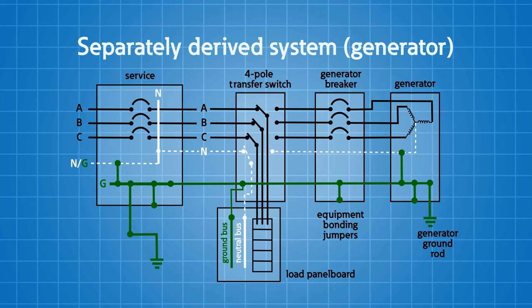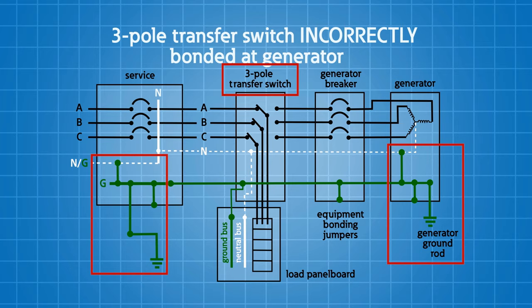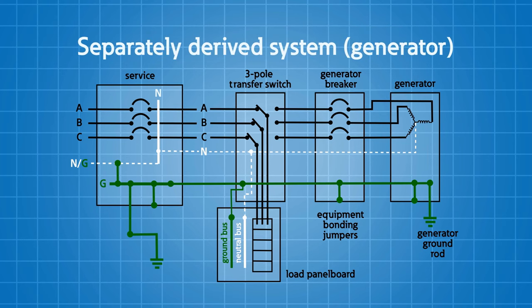Understanding that this action creates a separately derived system is important because it drives what you do in the transfer switch. If you bond neutral to ground in the generator and establish a separately derived system, you're going to need to switch the neutral in the transfer switch, meaning you'd need a four-pole transfer switch instead of a three-pole transfer switch. If you're bonded in the generator but not switching the neutral, you have two separate areas where the neutral conductor is being bonded, which can cause circulating currents and cause GFCIs or ground fault protection equipment to not work correctly. A simple fix if you have a three-pole transfer switch and bonded the neutral in the generator is to just lift the bond in the generator — your generator instructions will tell you how.